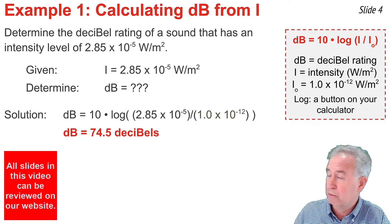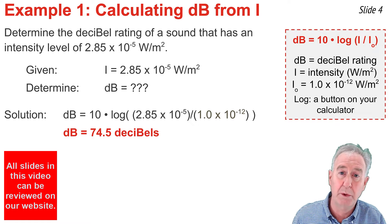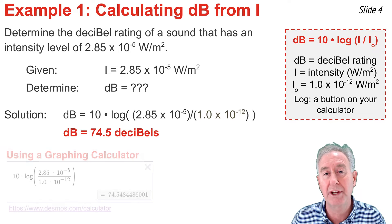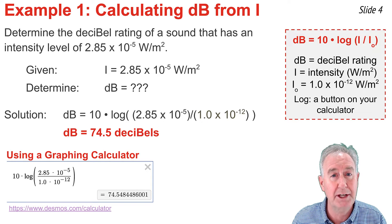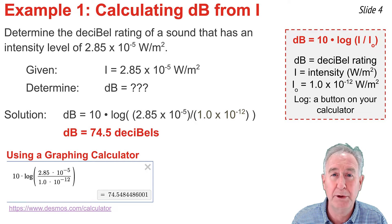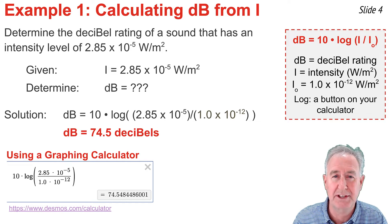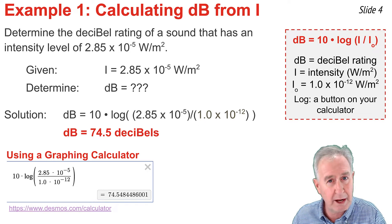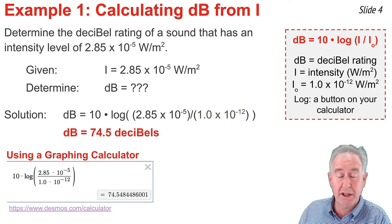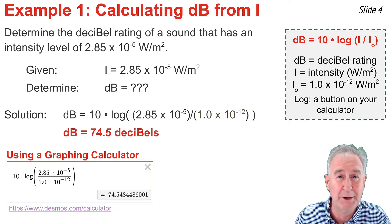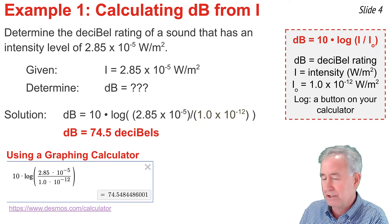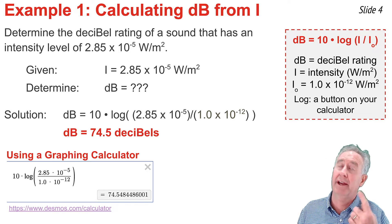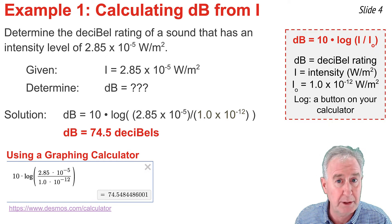When a student misses this problem, it usually has very little to do with the equation or the substitution — it most often has to do with the use of the calculator. There are two broad categories of calculators. First, the graphing calculator, a multi-line calculator. I'm using an online graphing calculator called Desmos.com, and a graphing calculator generally makes this calculation much easier. It looks like this: 10 times the log of a ratio, with the numerator and denominator matching the equation. 74.5 decibels is the rounded answer.